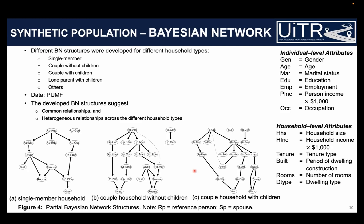Once we built the BN structures for each of the five household types, we used the conditional probabilities estimated from those structures and applied a forward sampling technique to expand the data, creating a population pool of approximately one million people living in 400,000 households, maintaining the same conditional probabilities obtained from the BN structures.